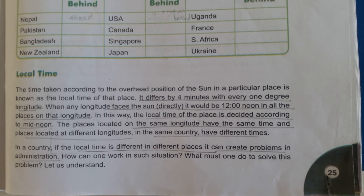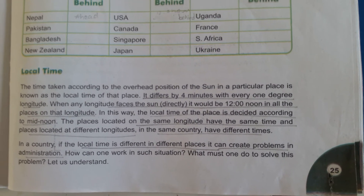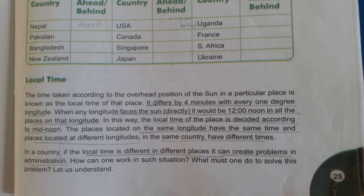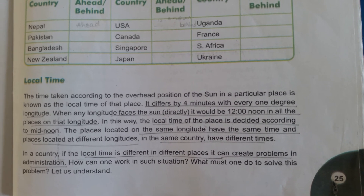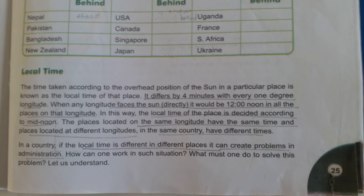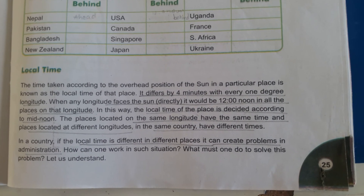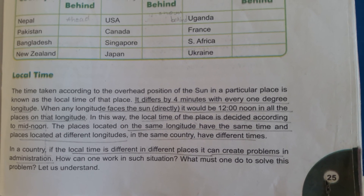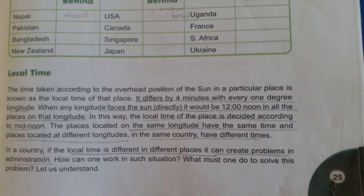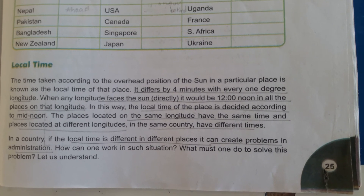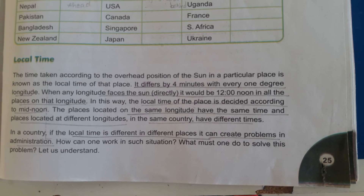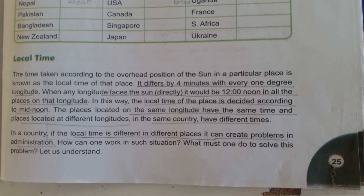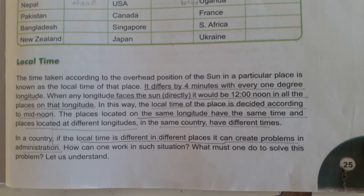When any longitude faces the sun directly, it would be noon — 12 o'clock — at that longitude. So the local time of a place is decided by the overhead position of the sun, that is mid-noon. Places located on the same longitude have the same time, and places located at different longitudes in the same country have different times. If local time differs across places within a country, it can create problems in administration.